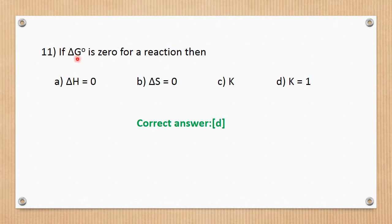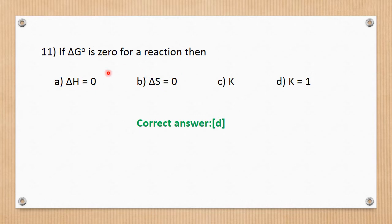Question number 11. If delta G equals zero for a reaction, then the equilibrium constant K equals e to the power of minus delta G0 / RT. When delta G equals zero, e to the power 0 equals 1, so K equals 1. The correct answer is D.